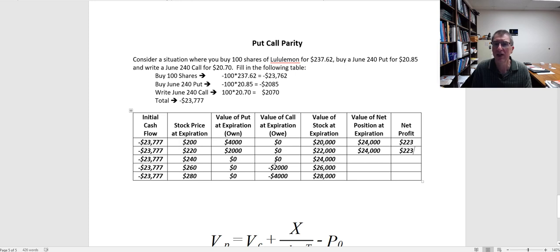The stock closes at $240. My put is worth nothing. The call I wrote is worth nothing. The stock I own is worth $24,000. Again, add those up, $24,000 for a net profit of $223.